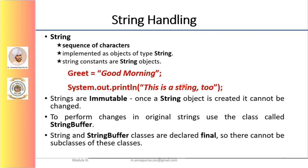This also allows certain optimizations that increase performance to take place on common string operations. All three implement the CharSequence interface. One last point to note is that strings within objects of type String are unchangeable — the contents of the string instance cannot be changed after it has been created. However, a variable declared as a string reference can be changed to point at some other string object at any point of time.